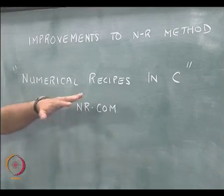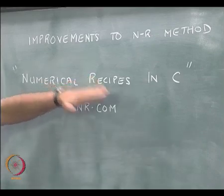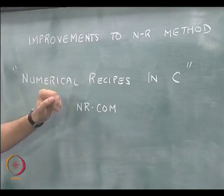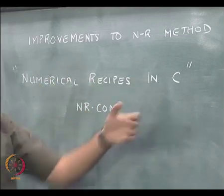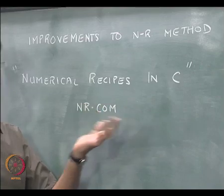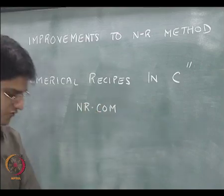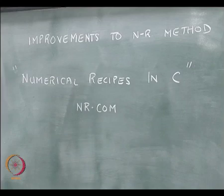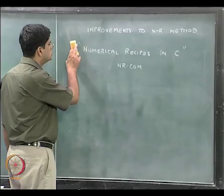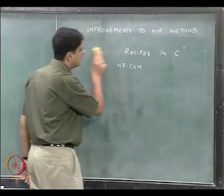You can go to nr.com and download essentially the second edition, which I believe is Numerical Recipes in Fortran. That is the second edition available for download from nr.com and it is a very good resource if you want to understand or use numerical recipes in a better way.